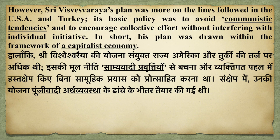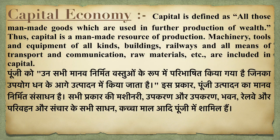The plan was based on the framework of a capitalist economy. Capital refers to all those man-made goods which are used in the further production of wealth. For capital or wealth generation, whatever man-made goods are used — that is called capital. Capital is the man-made resource of production: machinery, tools, equipment, buildings, railways, transport, communication, raw materials — everything related to generating capital is included in the capital economy.